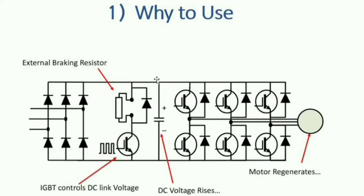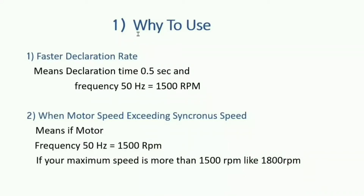If we don't control the overvoltage, it can damage the rectifier, IGBT, or card. The circuit senses the over-voltage DC level and switches on the braking IGBT. The voltage then goes through the resistor to the negative rail, and the excess voltage is dissipated as heat. There are two types of applications where we use the braking resistor.